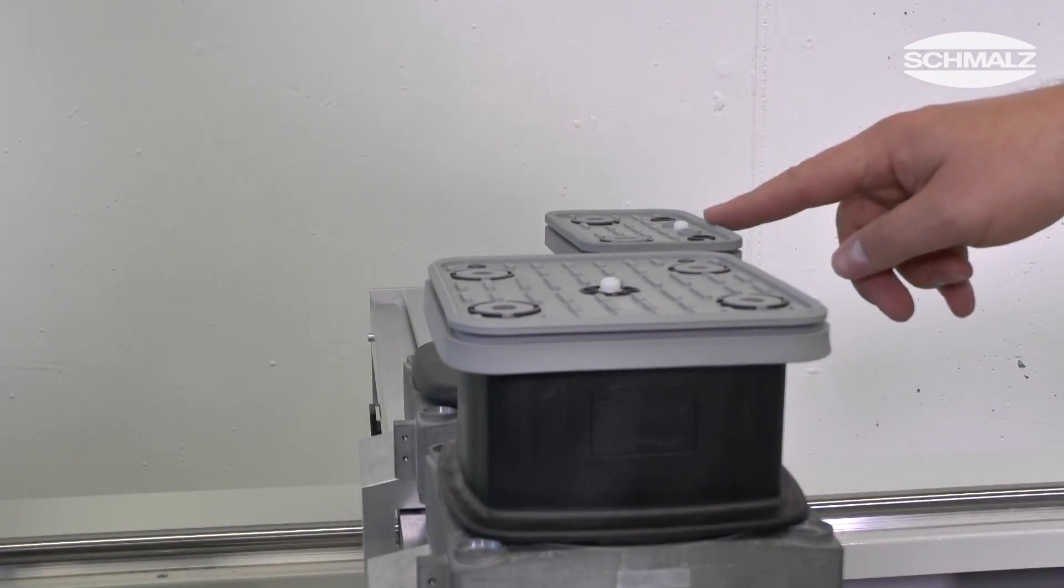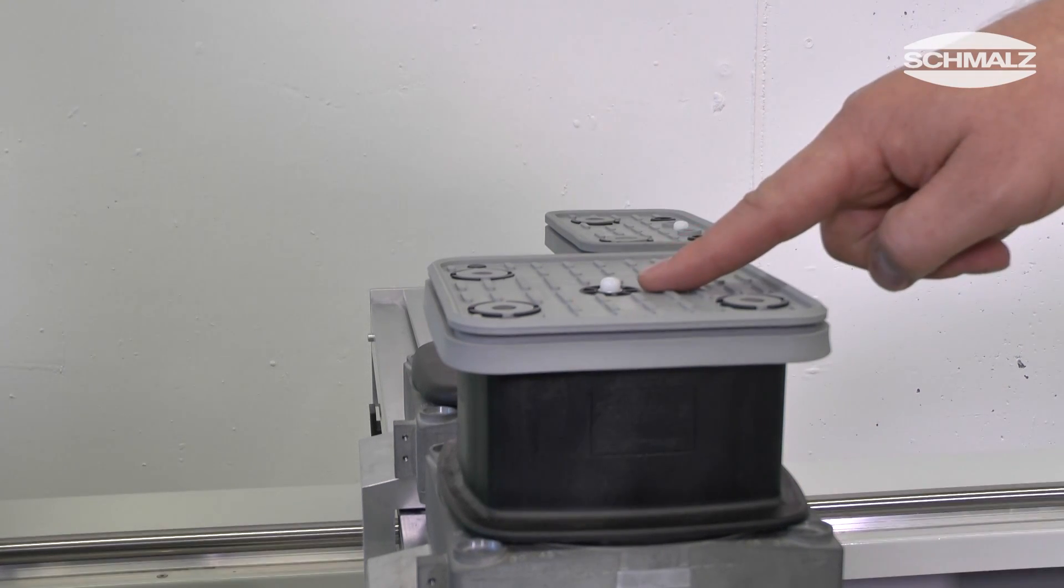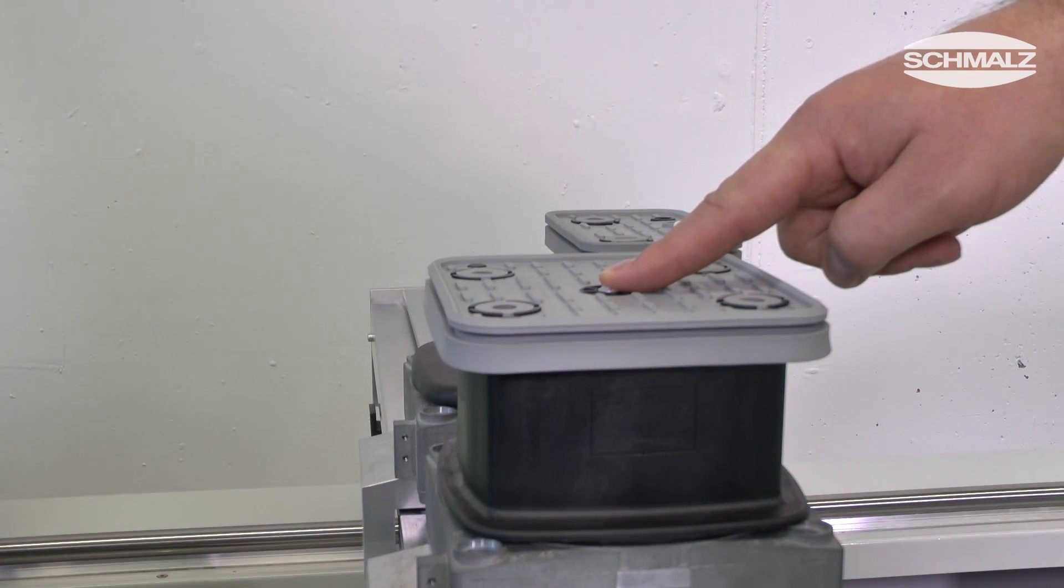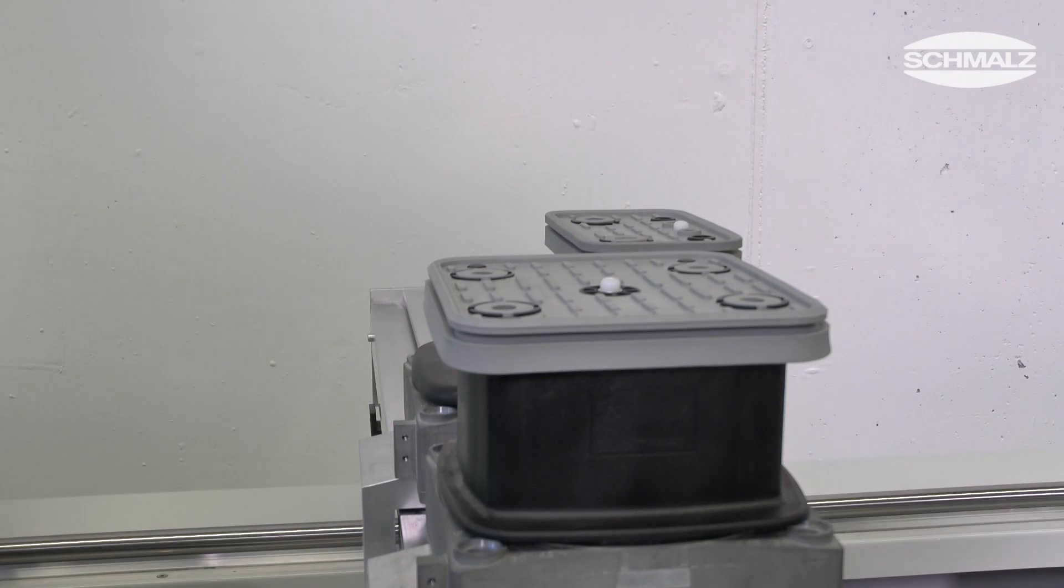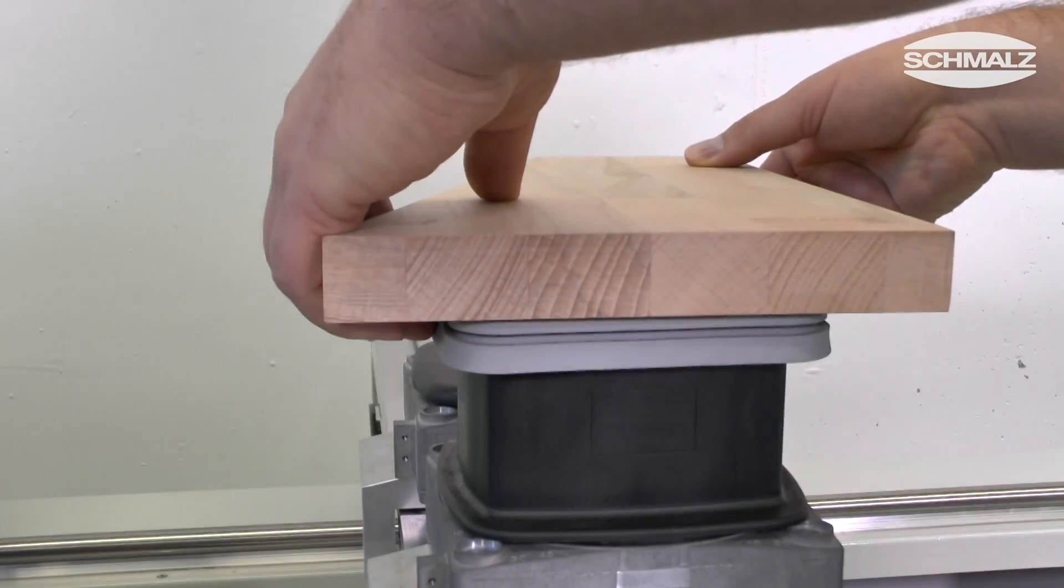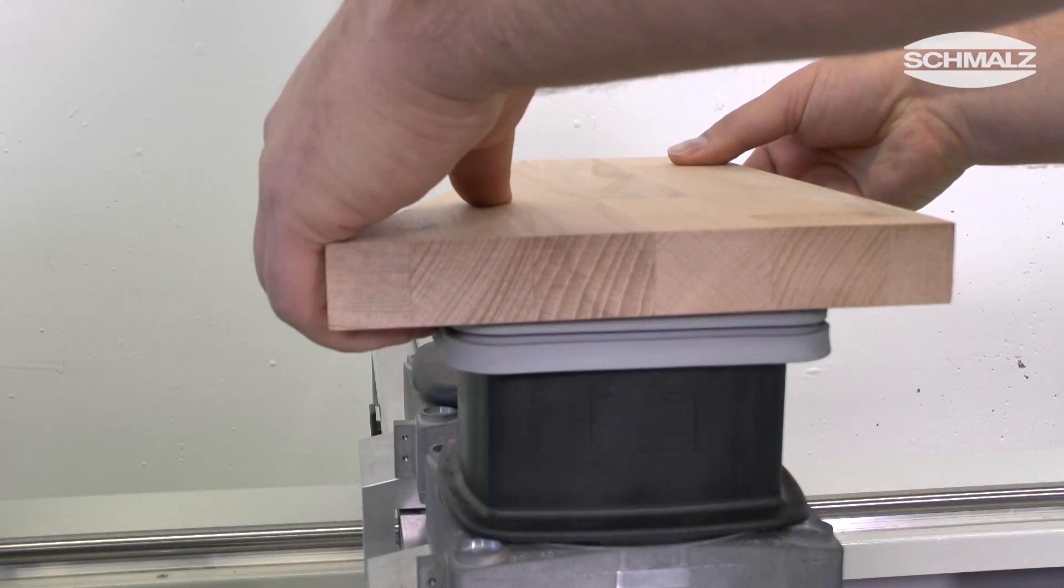Of course, all Schmalz vacuum blocks come with an integrated touch valve. The weight of the workpiece can be enough to activate the vacuum and it is also available as a spare part.